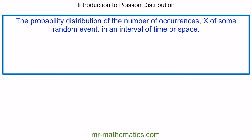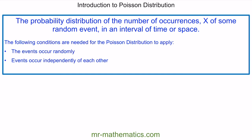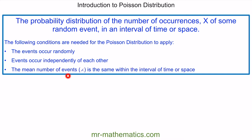It has the following conditions: the events must occur randomly; they must occur independently of each other; and the mean number of events must be the same within the same interval of time or space. The symbol lambda represents the mean.